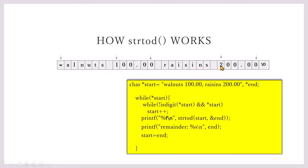Within the loop, it reads again — so while not isDigit it reads again up until that point, and then reports the next value, and so on. I hope it's clear as to how string to double works.